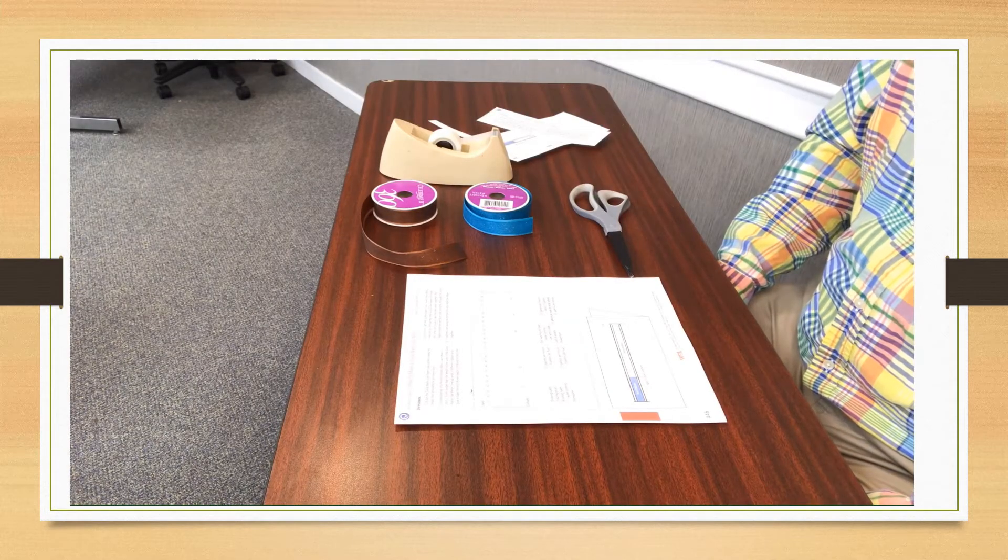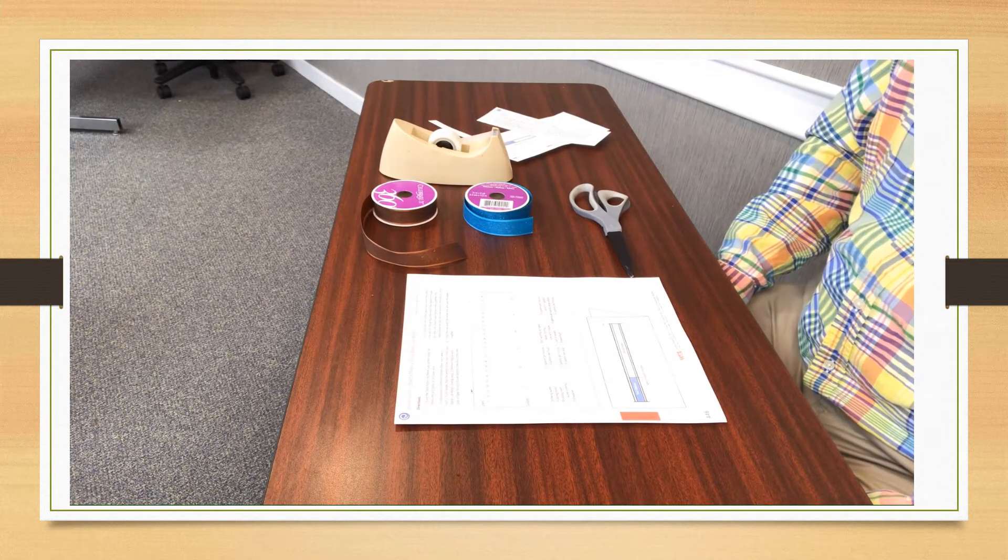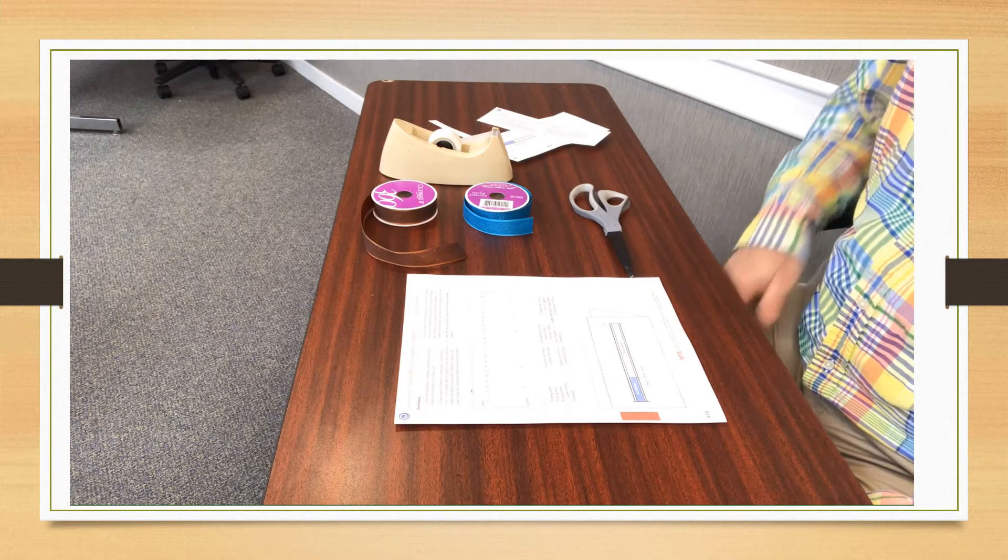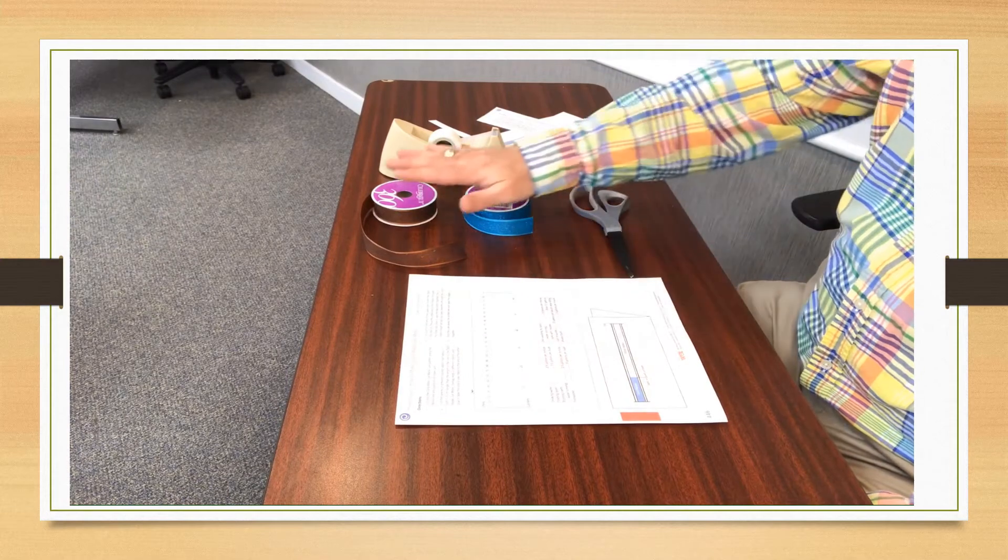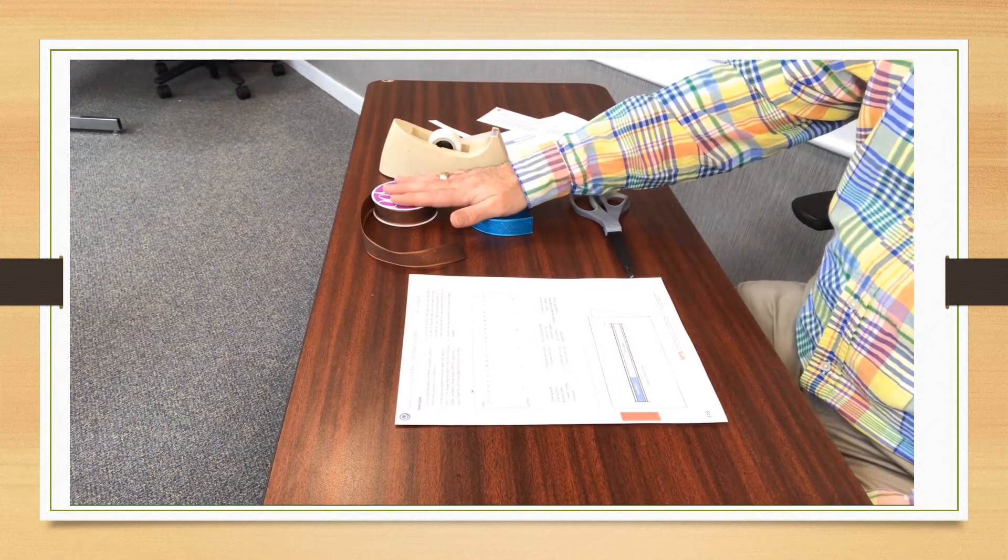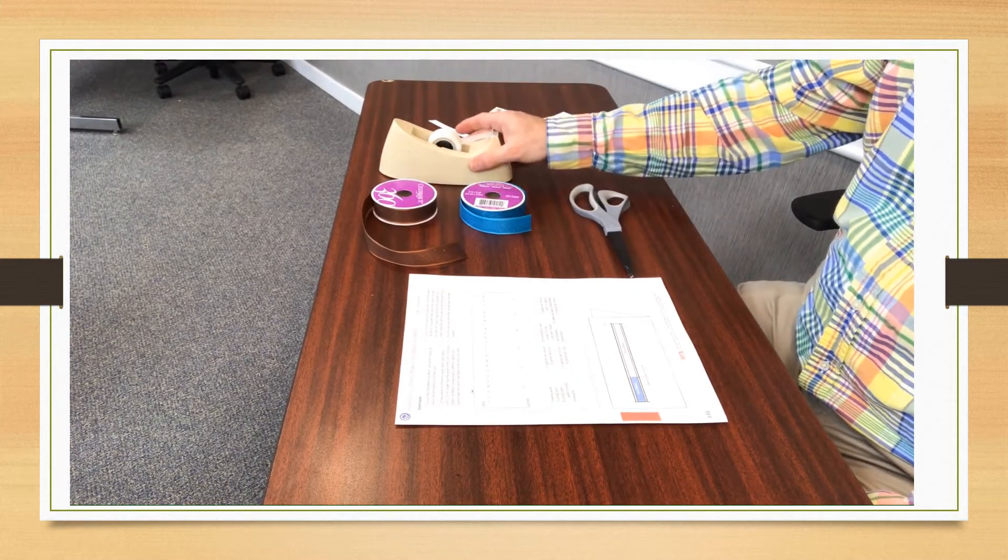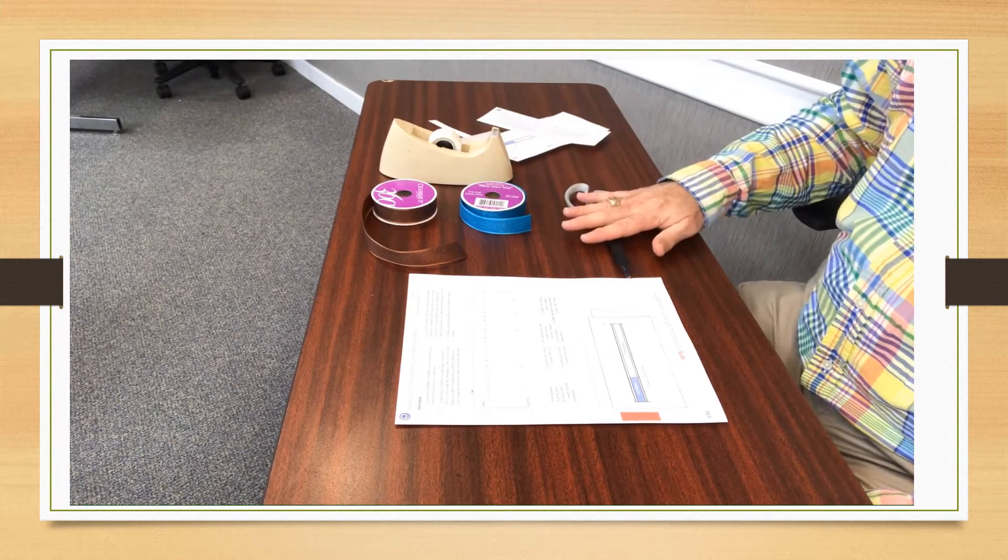So today we are going to construct a personal water meter. The supplies that you need are a printed copy of the personal water meter, two different colored ribbons, tape or glue, and a pair of scissors.